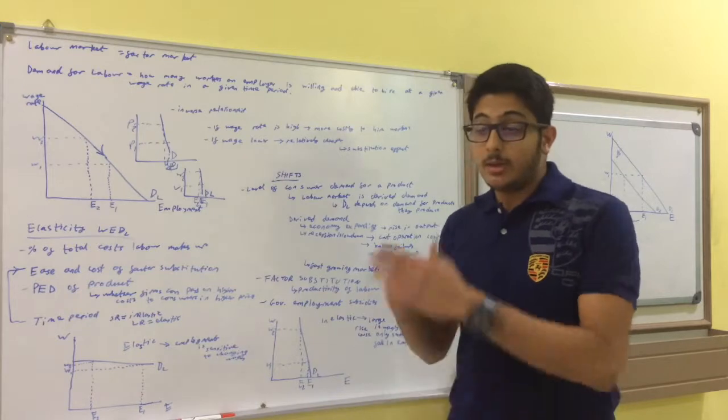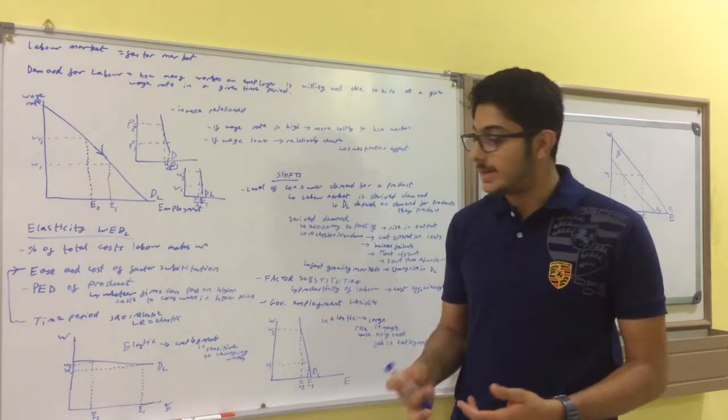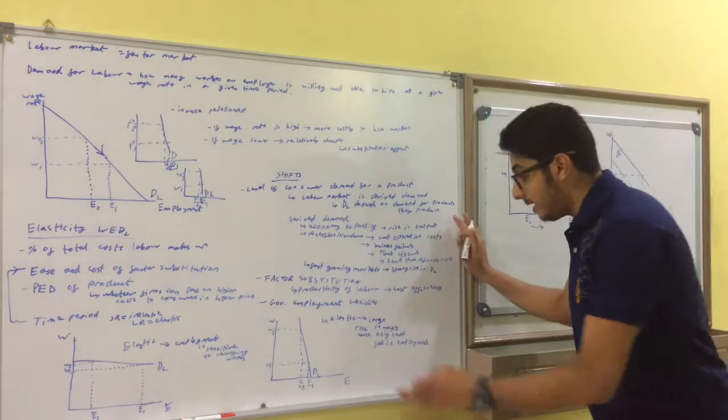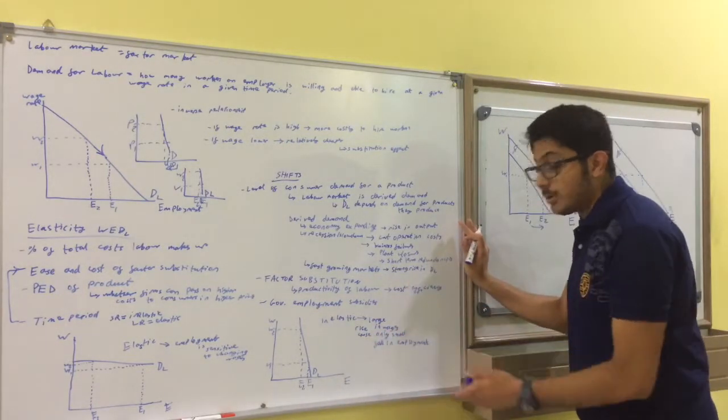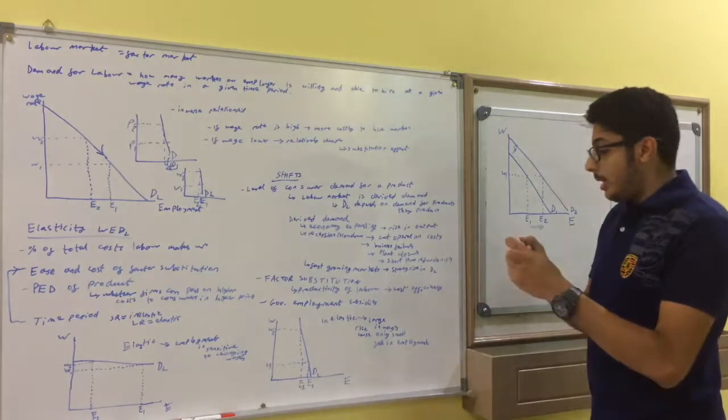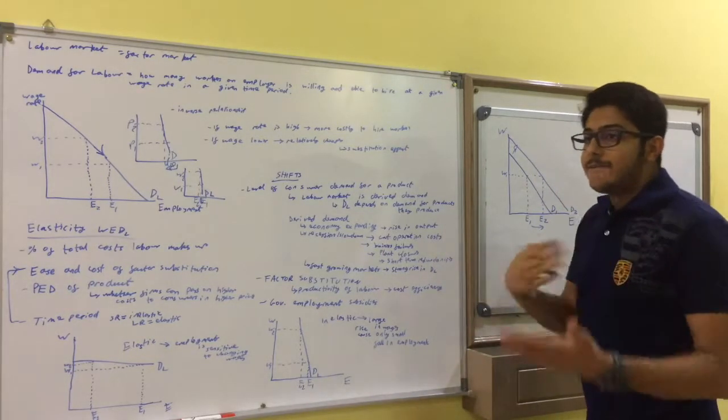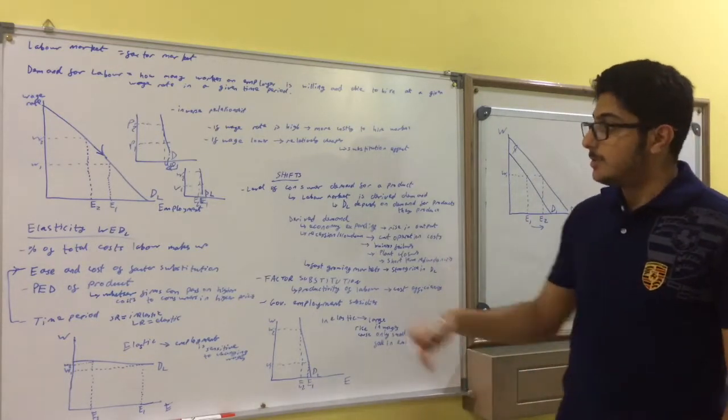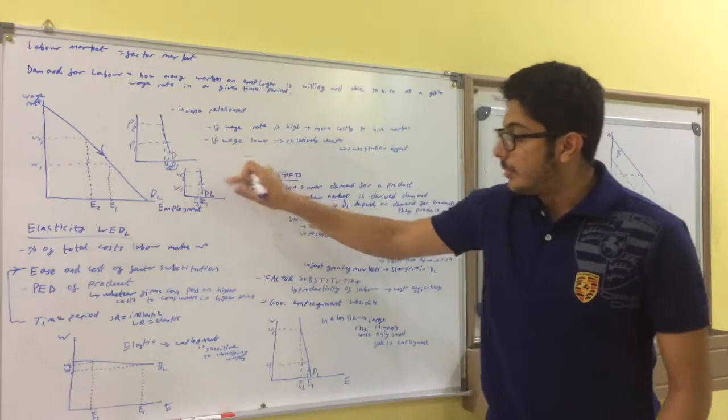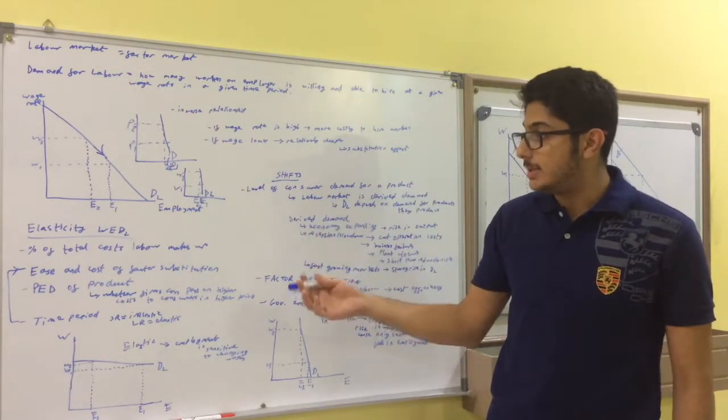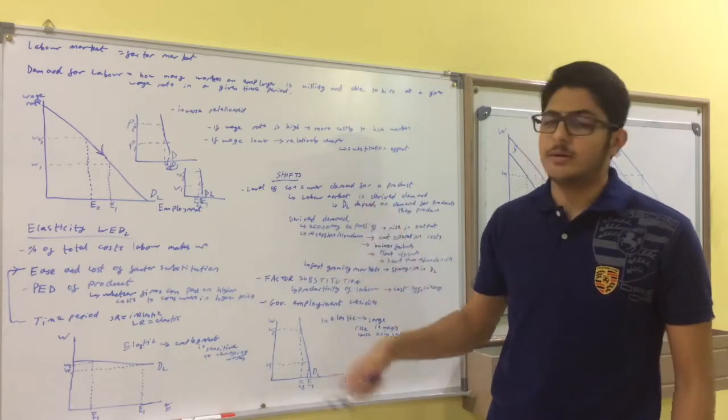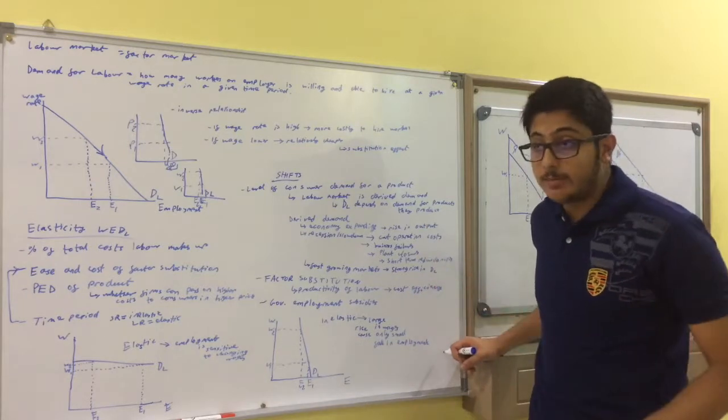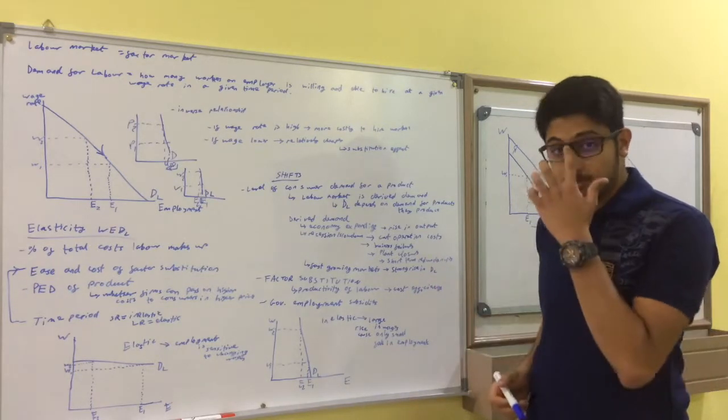Also, time period. In the short run, demand for labor is likely to be inelastic. In the long run, it's likely to be more elastic. So, demand for labor is inelastic. Large rise in wages, for example, will not affect the employment by that much. It will only cause a small fall in employment. As we saw with this example here, with the inelasticity of the product. That's demand for labor. This has been the awesome tutor. Bye!